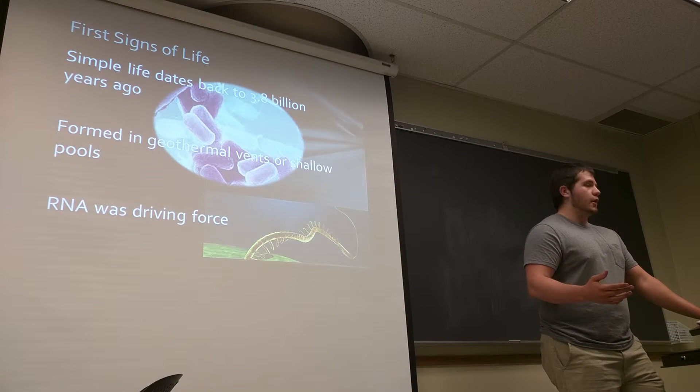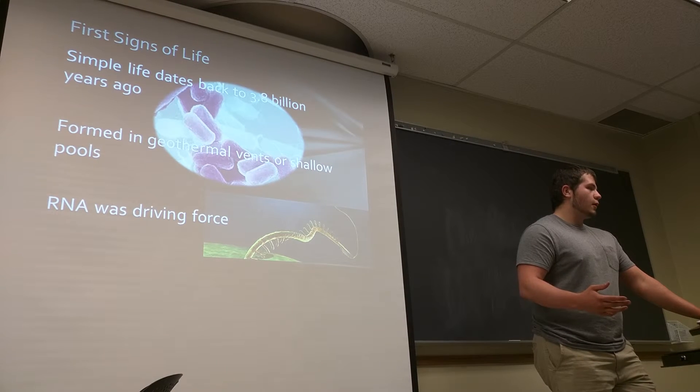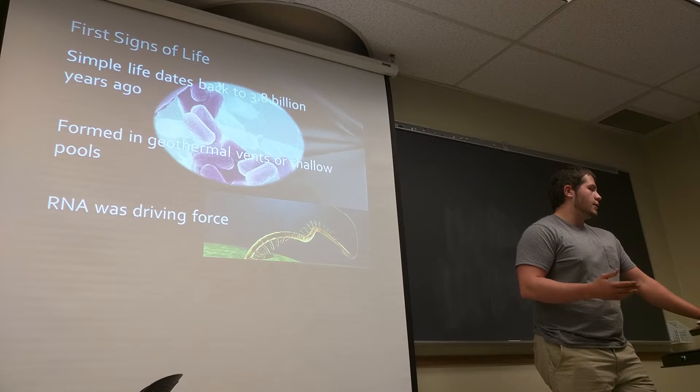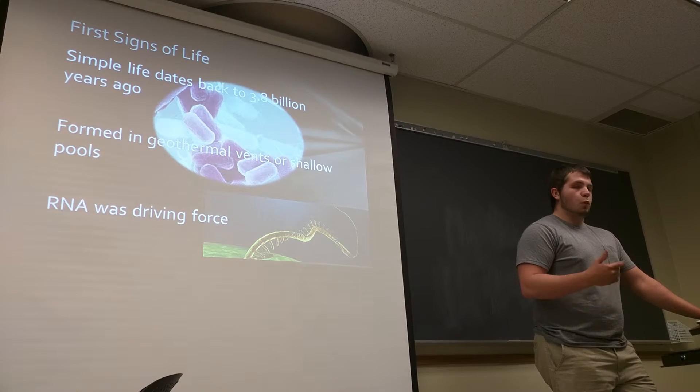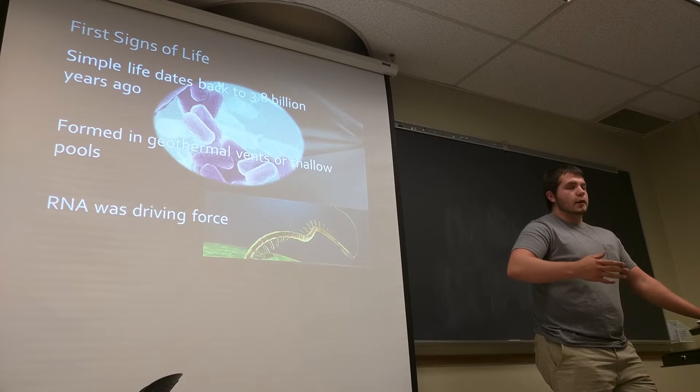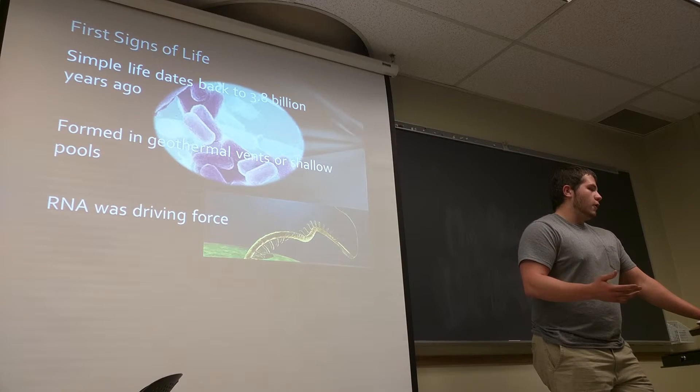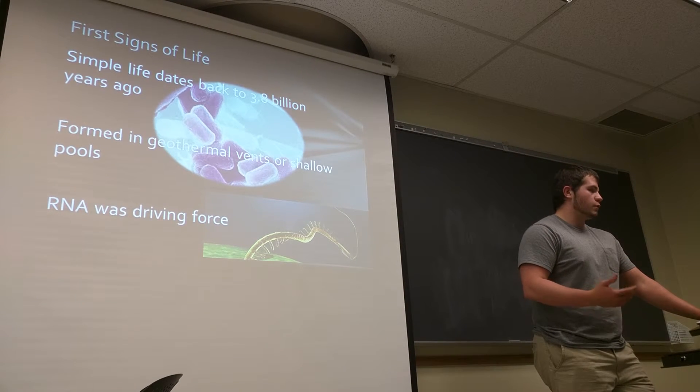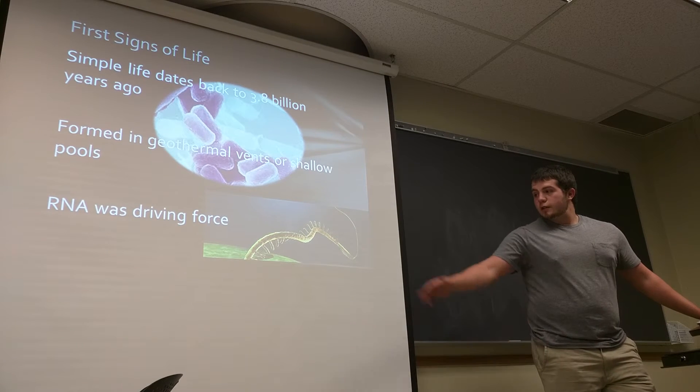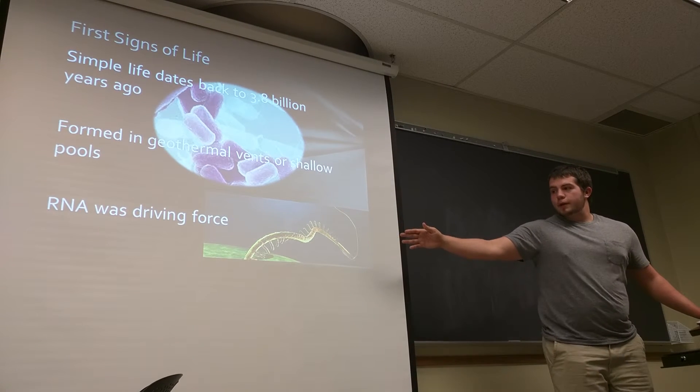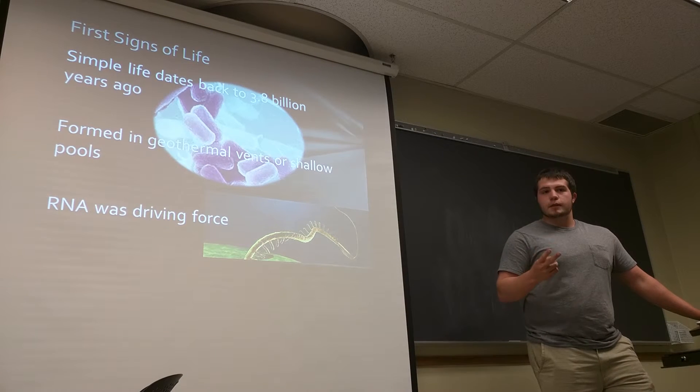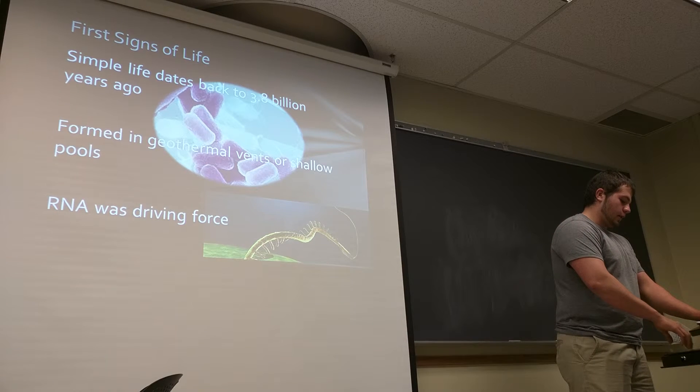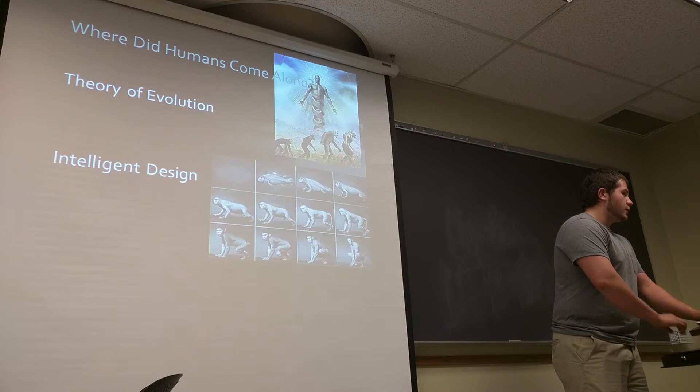If you jump ahead in almost another billion years, the first forms of life actually came onto Earth. They were really simple, one cell organisms. And a lot of scientists theorized that they formed either in geothermal vents because it was warm and there was a lot of pressure there and those were the requirements to form RNA or they formed in shallow pools on Earth where the crust wasn't necessarily done cooling yet. As you can see right here, this is a picture of RNA. It's very similar to DNA, and it was really the driving force of early life.